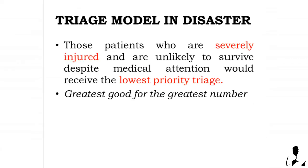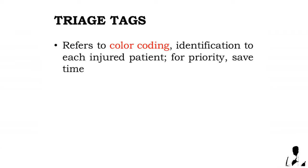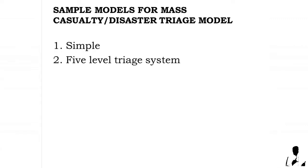In the triage model used in disasters, patients who are severely injured and unlikely to survive despite medical attention receive the lowest priority — the principle being greatest good for the greatest number. In emergency nursing, priority goes to those patients in severe condition. Triage tags use color-coded identification for each injured patient to save time. The main purpose of the mass casualty/disaster triage model is to provide the most effective care for the greatest number of patients. Sample models include the Simple triage system and the Five-Level triage system.